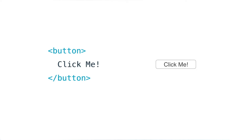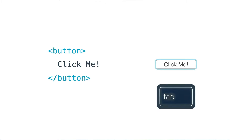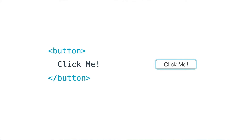Pay attention to how this native button element reacts when it receives input from different devices. When I click on it with a mouse you'll notice that I don't see a focus ring, but when I press the tab key I do see a focus ring.